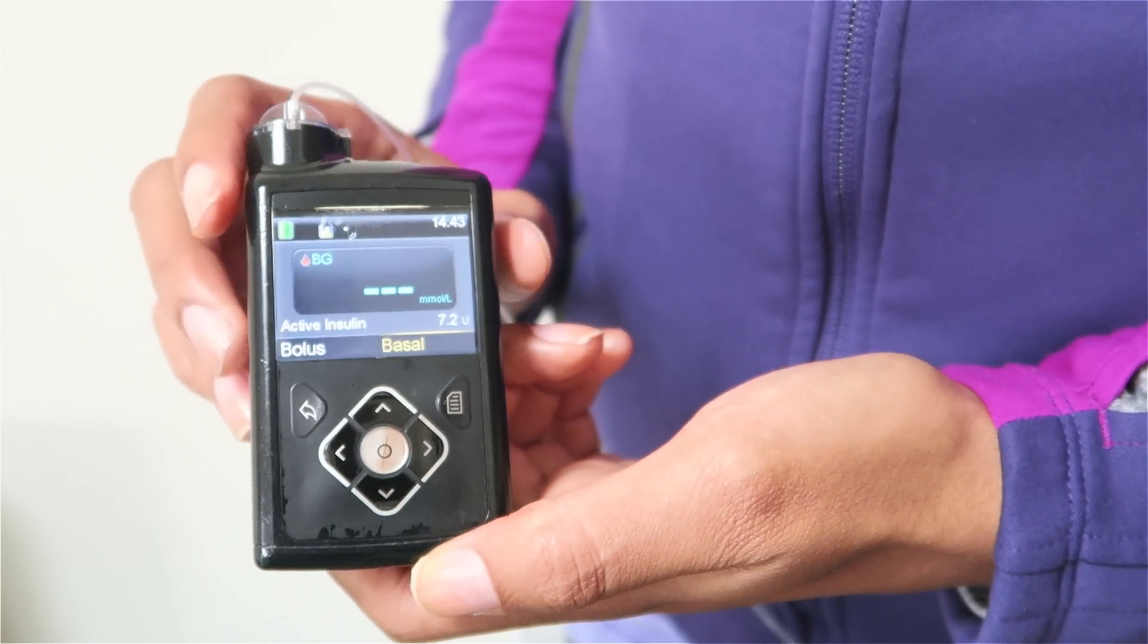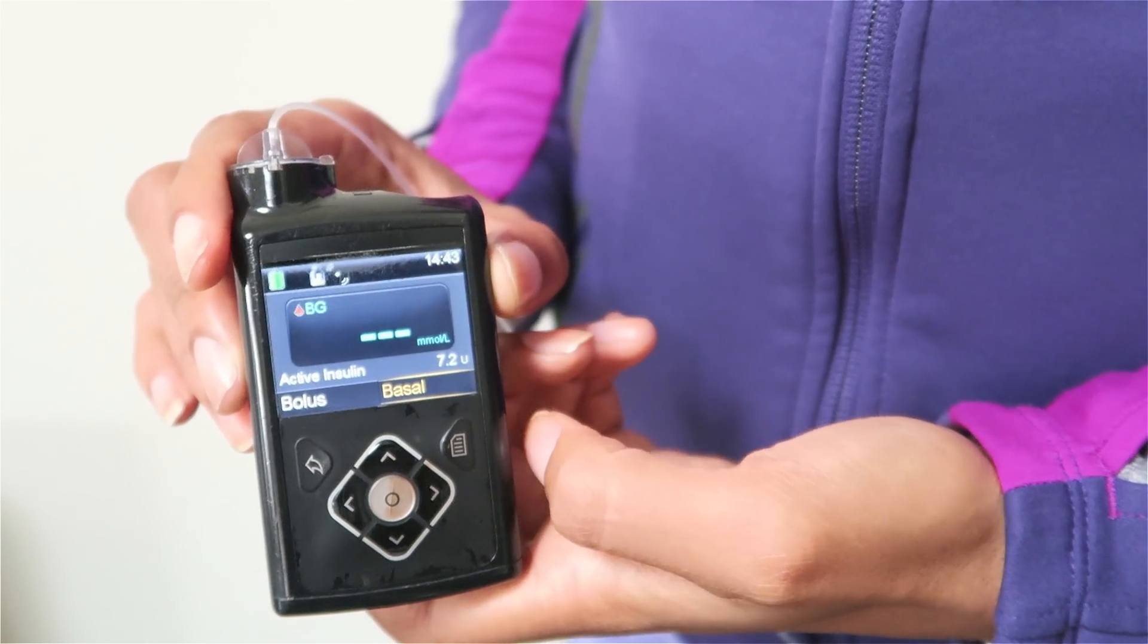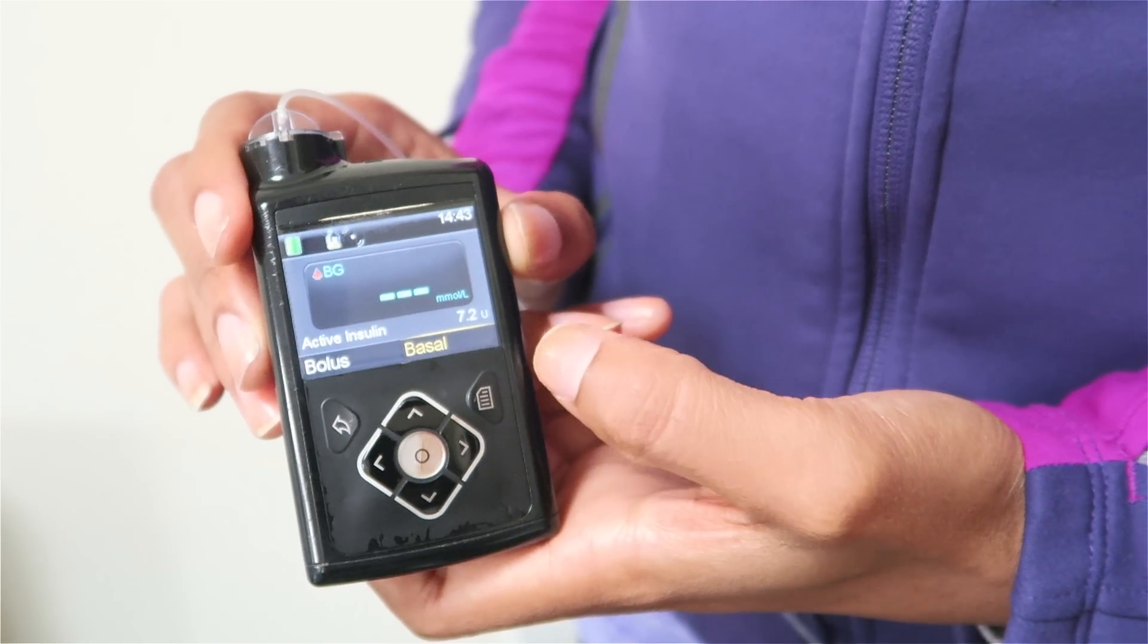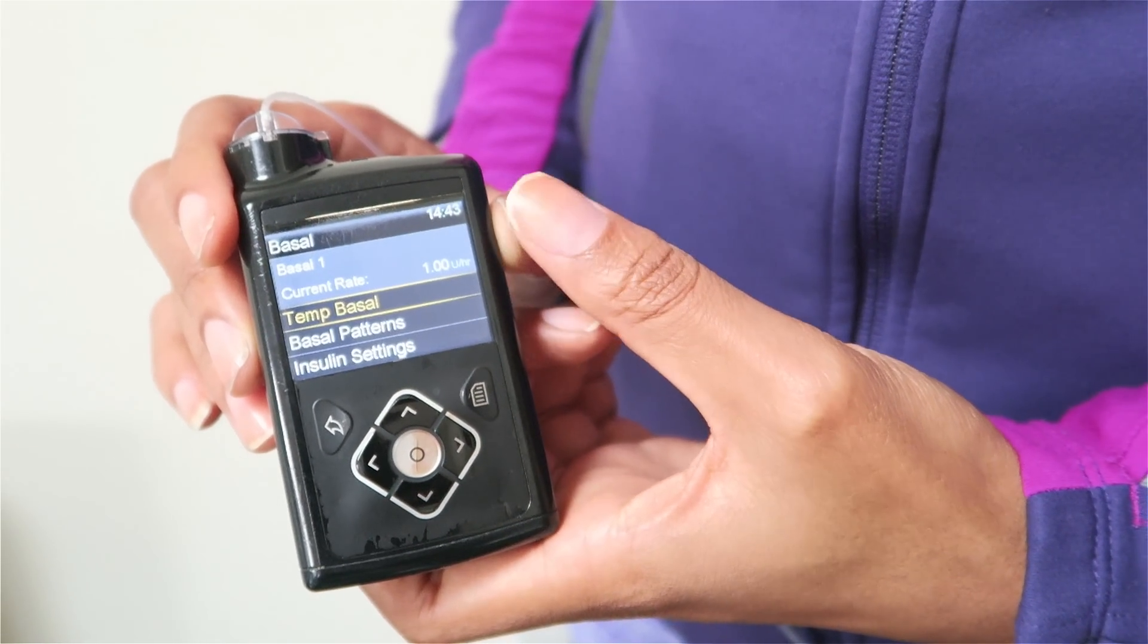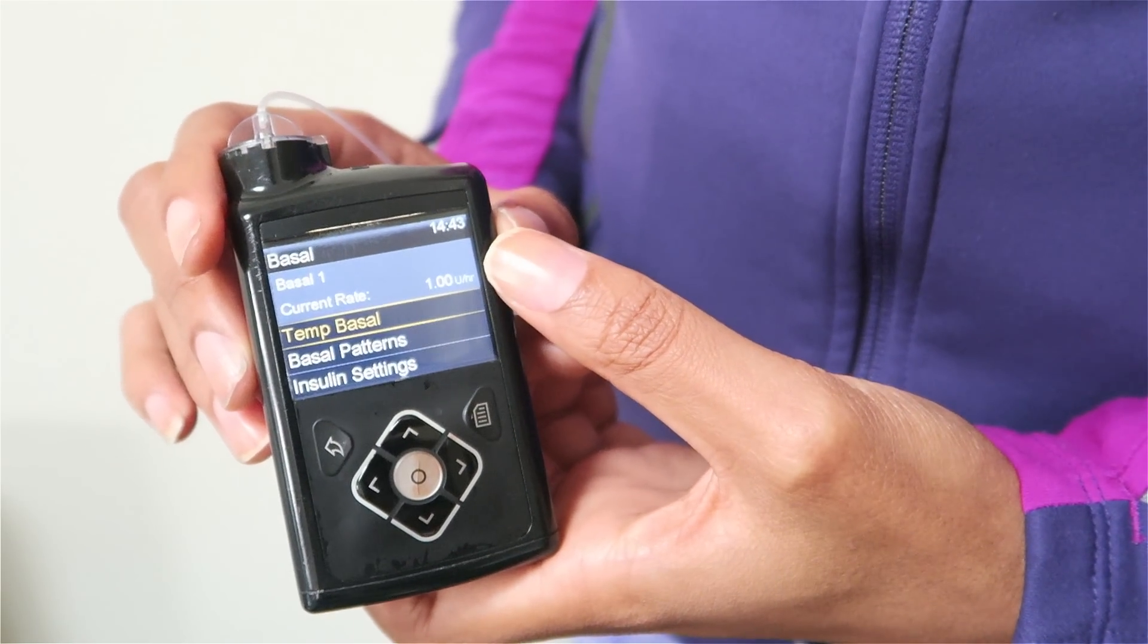So if we have a look at this pump now, we've got the basal option on the home screen, which is really handy. So if we click on here, we're able to see that my current basal pattern per hour is one unit.